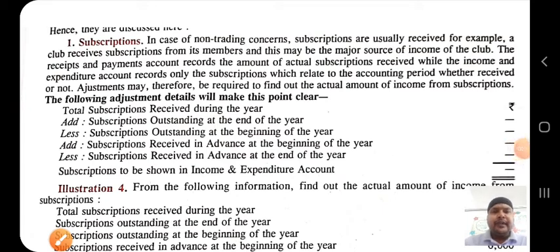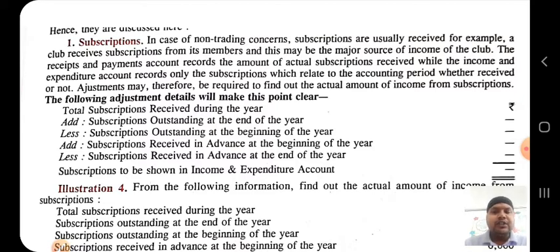Good morning to all students. Once again we are introducing a new topic of this chapter. The chapter is financial statement of not-for-profit organization. Such organizations are formed for providing service to a specific group or the public at large, such as education, healthcare, sports, and entertainment. The main objective of these organizations is to provide service either free of cost or at a concessional rate, and not to earn profit.